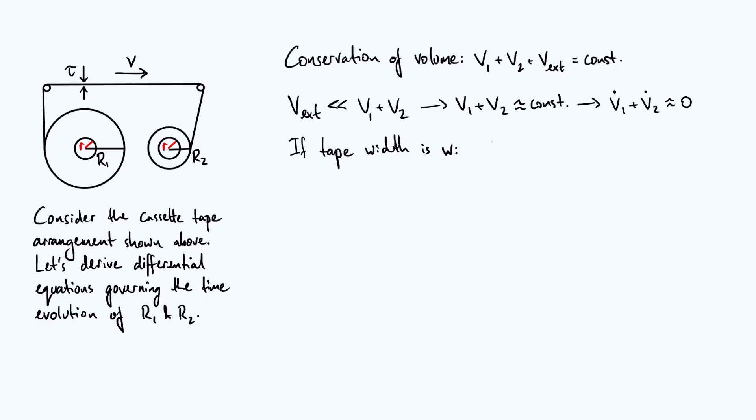So we can then come up with some expressions for the volumes V1 and V2. The volume V1, the volume of tape on the left-hand spool, is the volume of an annulus-shaped prism.